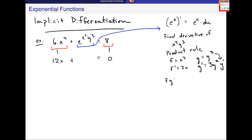And then fg prime plus gf prime, and this is x squared times 3y squared y prime plus y cubed times 2x. So maybe 3x squared y squared y prime plus 2xy cubed.